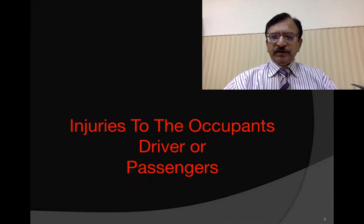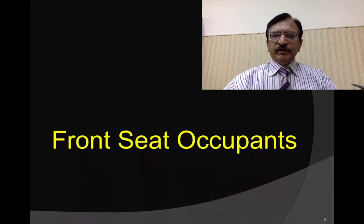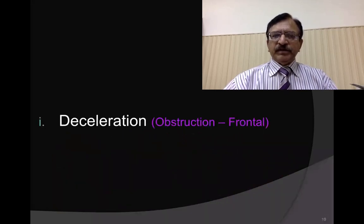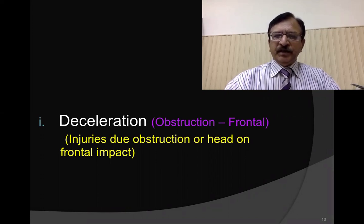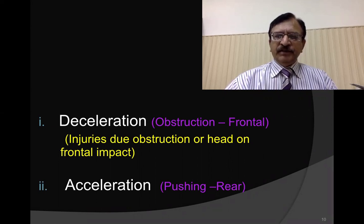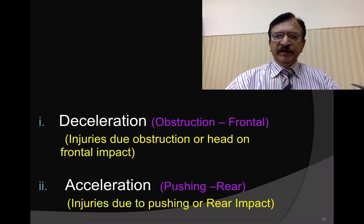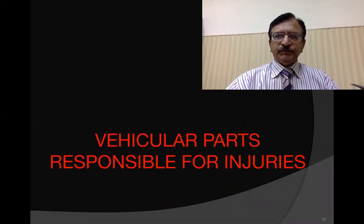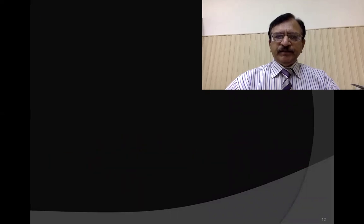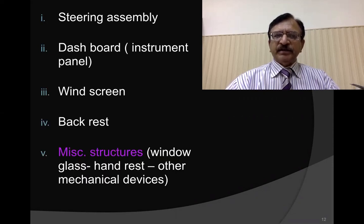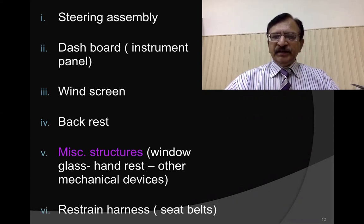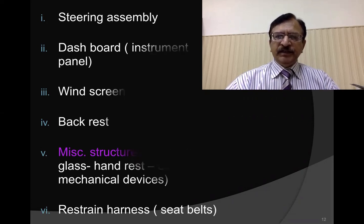Now, injuries to occupants — the driver and passengers. For front seat occupants, deceleration injuries occur in frontal impact due to sudden obstruction or head-on collision, while acceleration injuries occur when another vehicle strikes from behind — rear impact. The vehicle parts responsible for injury include the steering assembly, dashboard, instrument panel, windscreen, backrest, window glass, hand rest, and other mechanical devices, as well as seat belts and strain harnesses, which can sometimes also cause injuries.